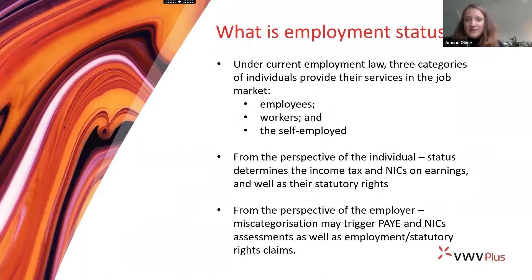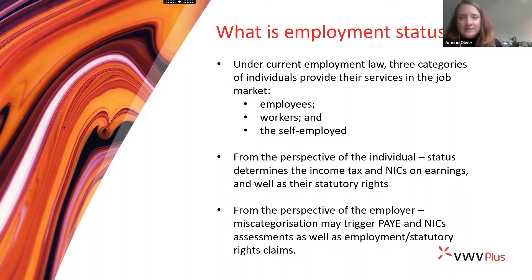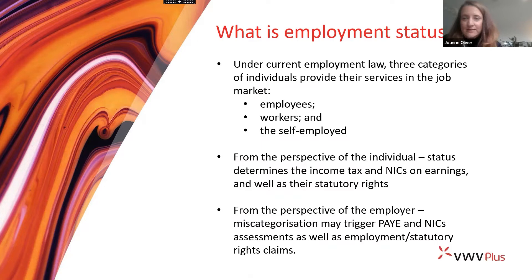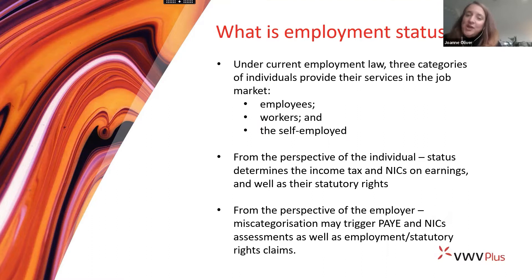The first key question is what is employment status? Under current employment law there are three different categories in terms of how individuals provide their services in the job market: employees, workers, and the genuinely self-employed. Workers are something of a hybrid category that sits in between employee and self-employed. Whilst the majority of working relationships remain the traditional employer-employee format, over recent years atypical working arrangements have grown in popularity, including zero-hours contracts and the rise of the gig economy through emerging technology.